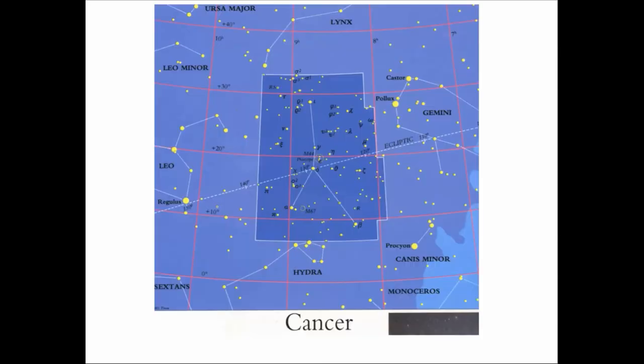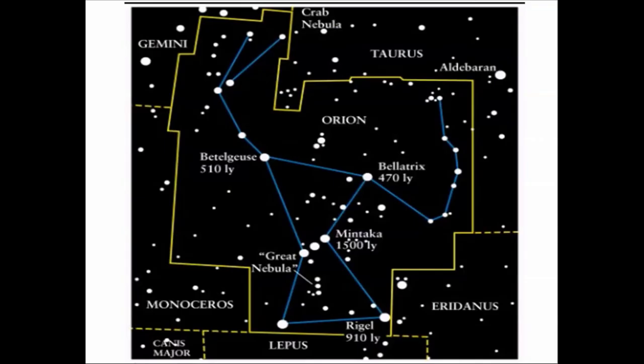This is Cancer, upside down Y, we try to recall. That's the asterism, the star pattern of Cancer, where this block section represents the constellation of Cancer.